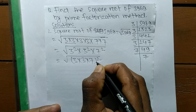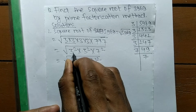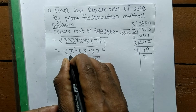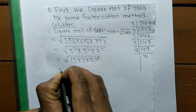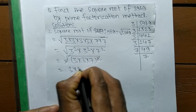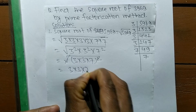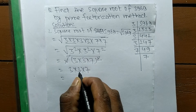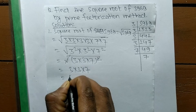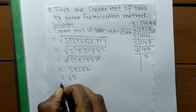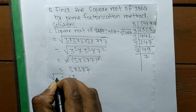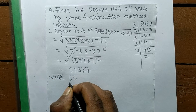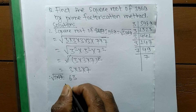We take the square root as common from all these numbers. The remaining part is 3 times 3 times 7. So 3 times 3 means 9, and 9 times 7 means 63. Therefore, the square root of 3969 is 63.